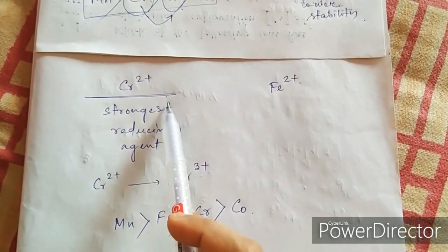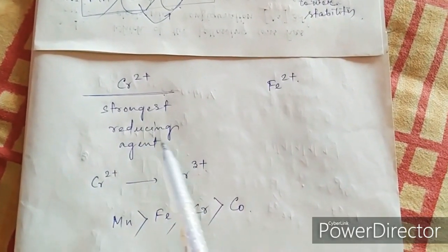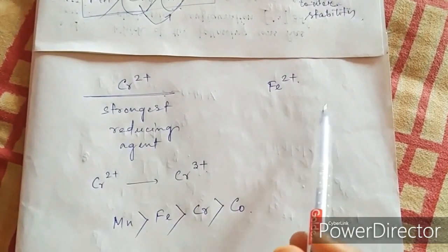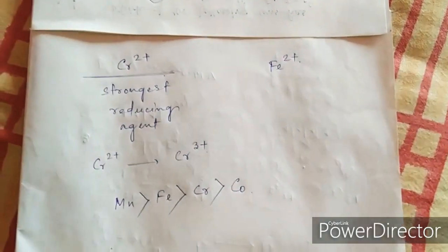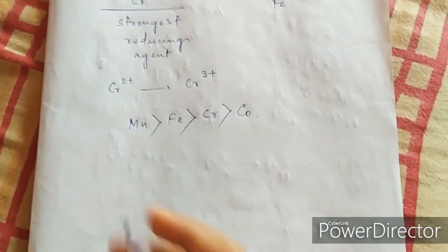Why is chromium 2+ the strongest reducing agent compared to iron 2+? Let's see the answer.